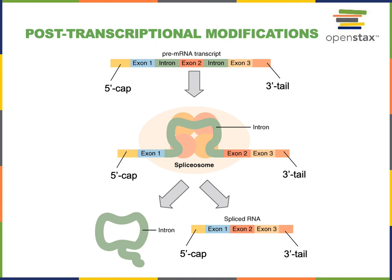Splicing is another mechanism required to produce a mature messenger RNA. Within the gene sequence, there are exons that are the sequences of DNA that code for the amino acids of a protein or polypeptide. There are also spaces of DNA sequence in between the exons. When a gene is transcribed, the RNA produced — known as the pre-messenger RNA transcript — includes introns that are separating the exons.